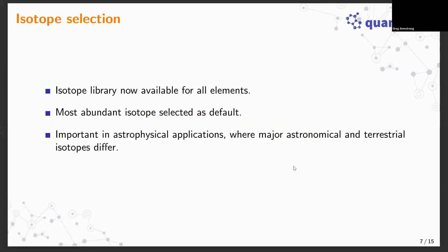That's the background theory. What's new in QEC? The main thing is isotope selection. Previously the most abundant isotope was what was assumed when entering any atom of choice, but an isotope library is now available for all elements that the user can choose. This is important particularly in astrophysical applications.